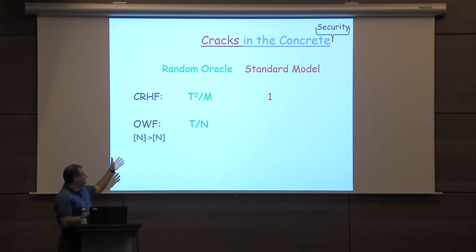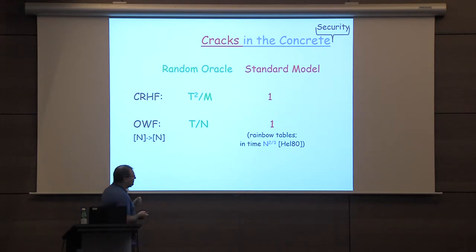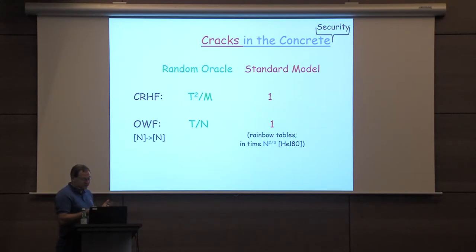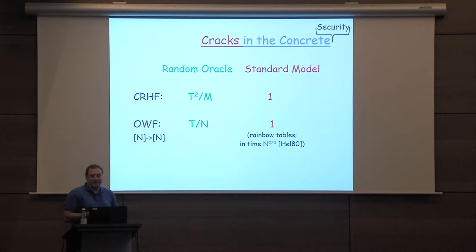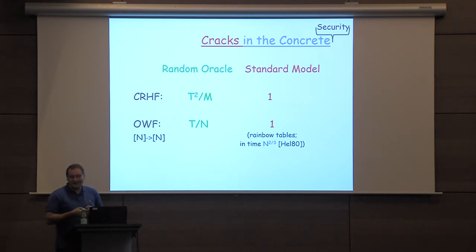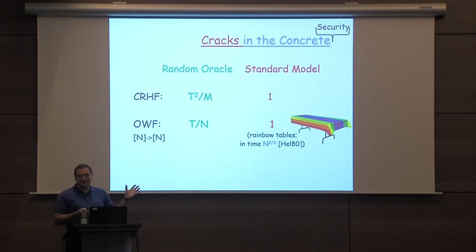For one-way functions, again, we have brute-force search attack — say, a length-preserving one-way function t over n. But there is this maybe less well-known but beautiful old technique due to Hellman, who shows that a random function can always be inverted by a circuit of sub-linear in the domain size — n to the two-thirds size. This is actually a beautiful technique; it led to the invention of rainbow tables, which are extensively used in practice to find password cracking. There are companies that use it, so it's not a hypothetical thing.